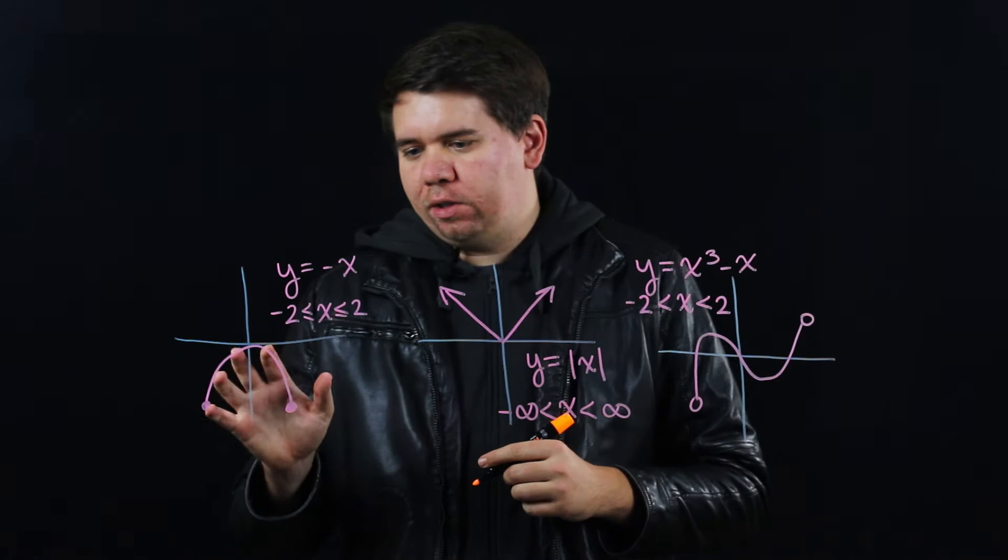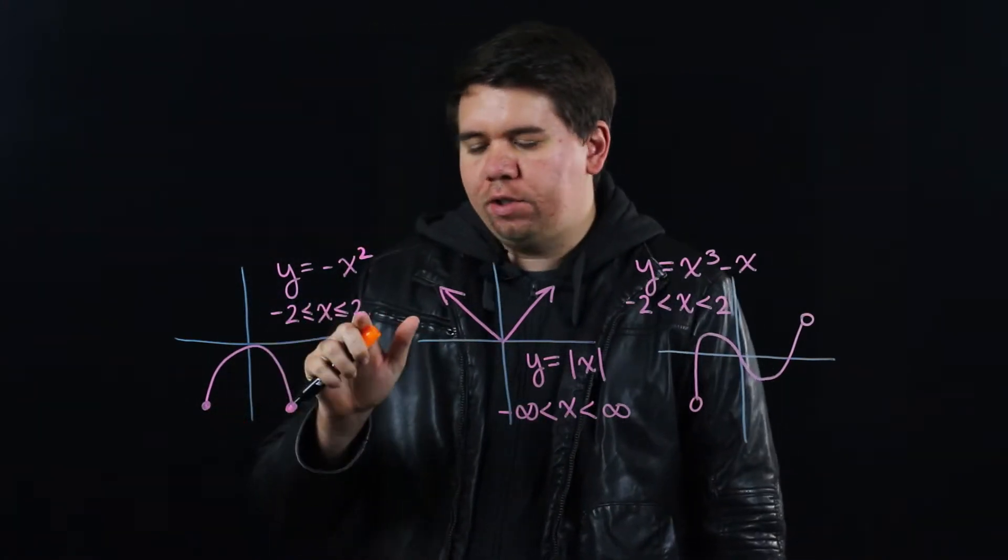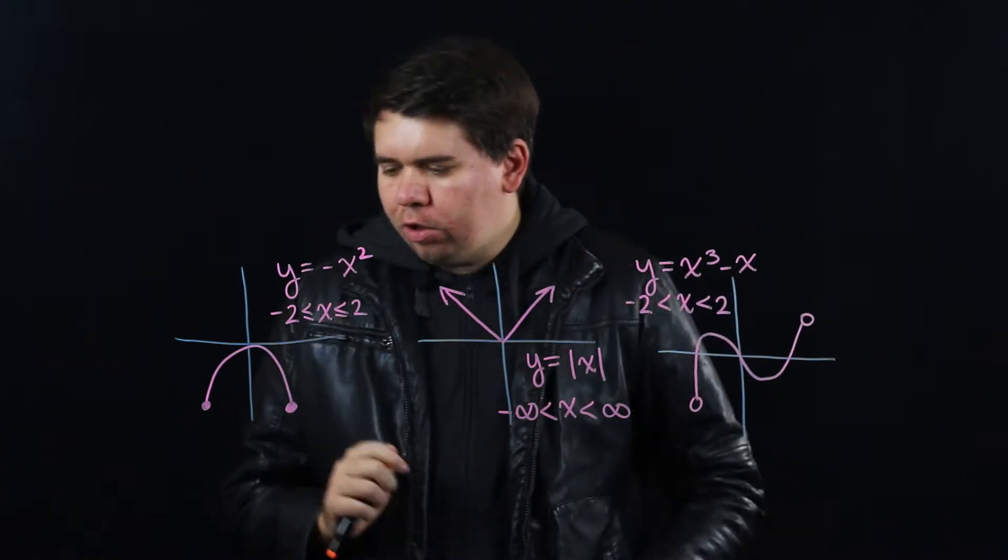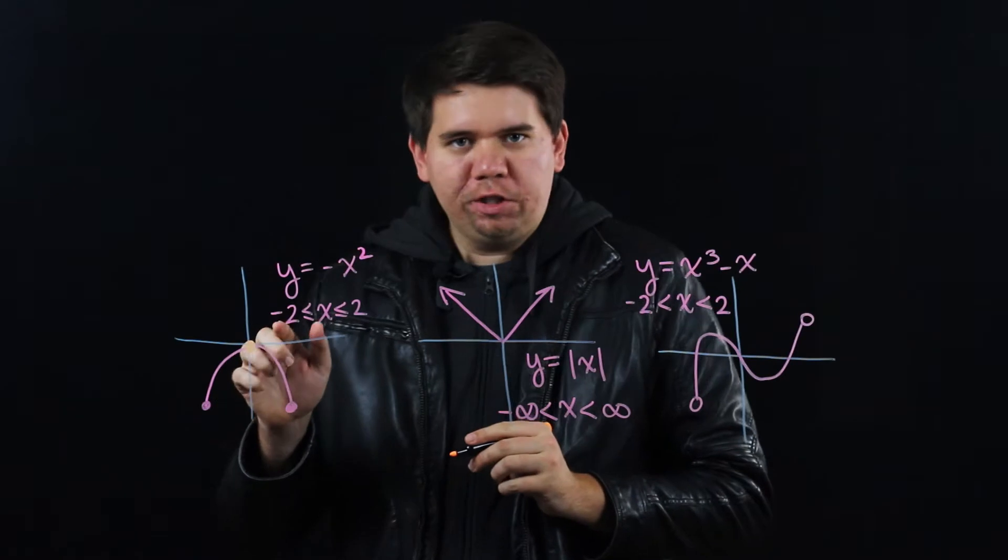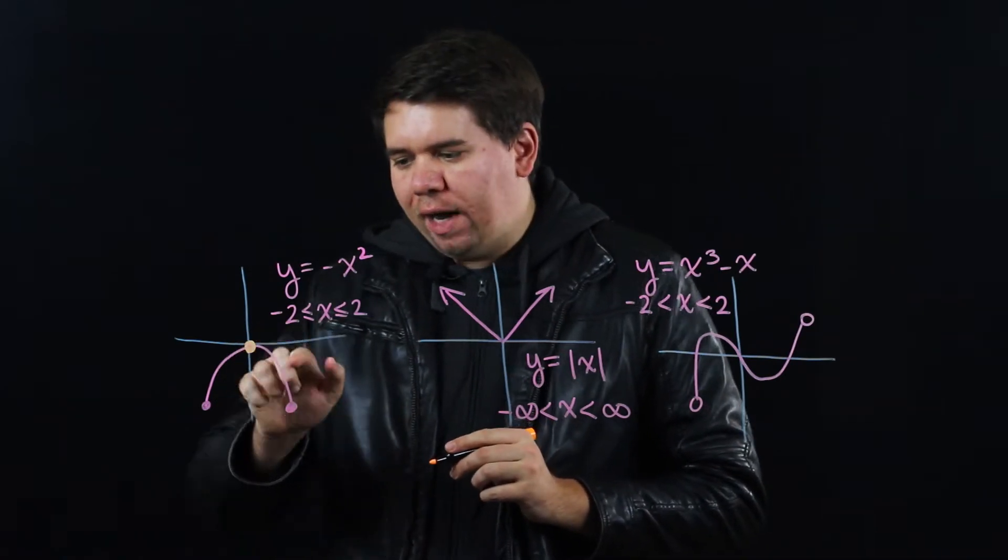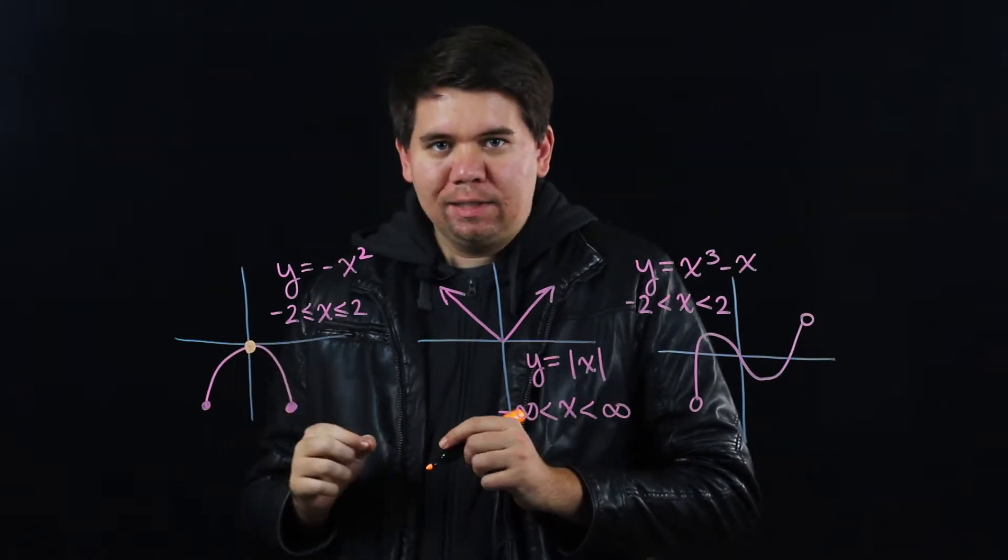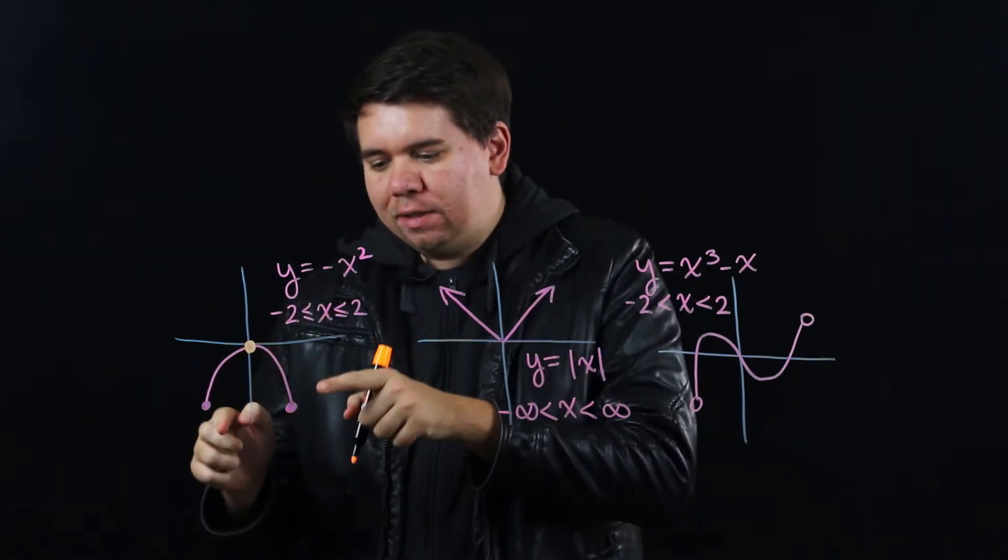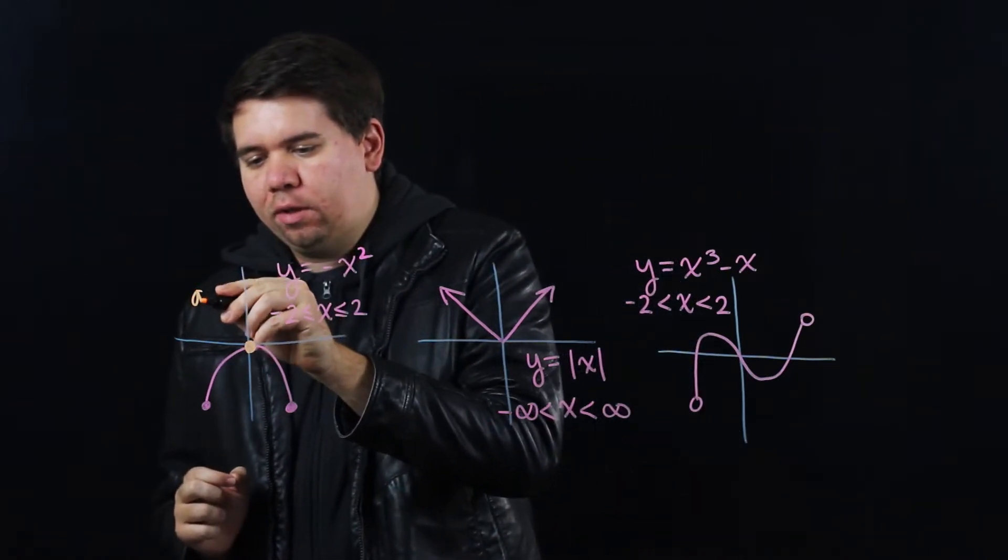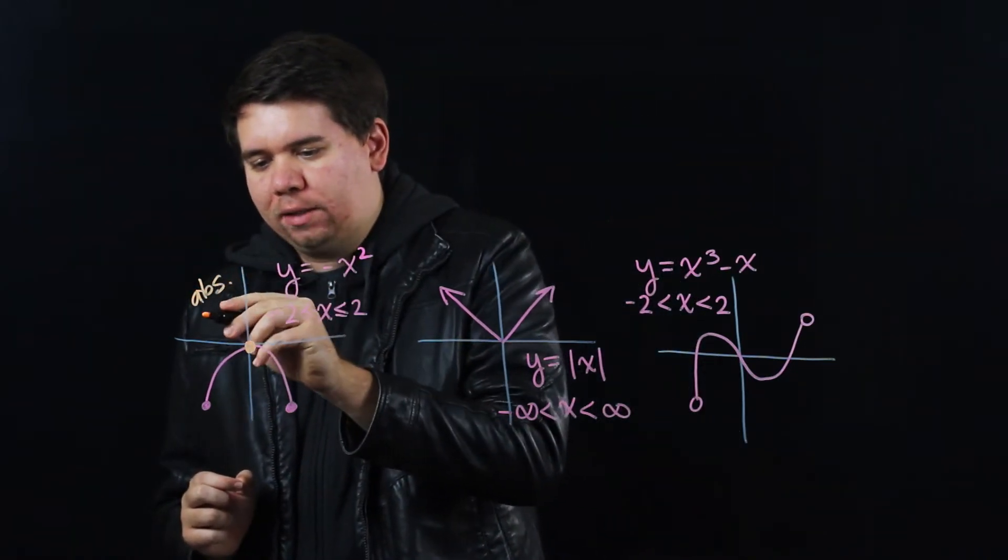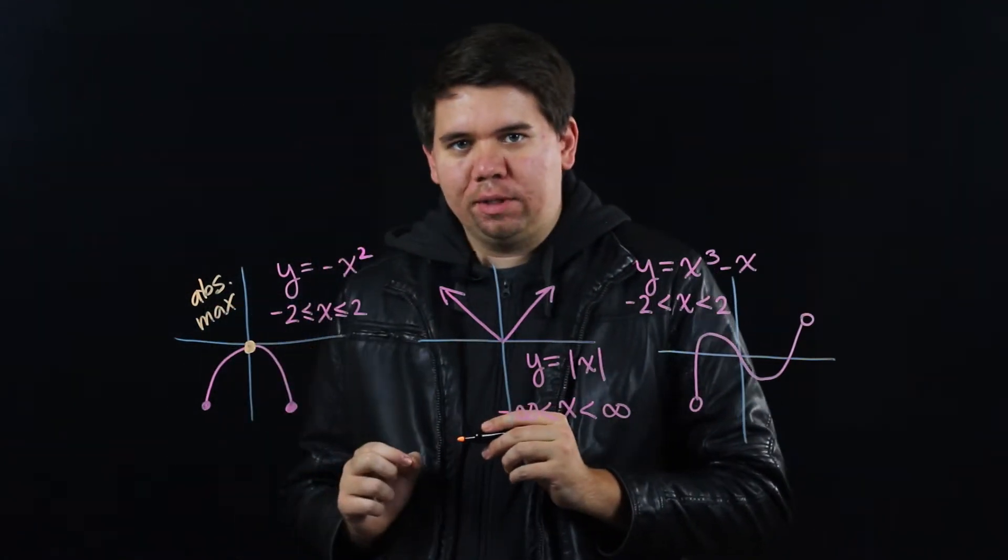For this first function, y equals negative x squared from negative 2 to 2. We can look at it and we can see clearly when x is 0, it's at its largest possible value. That's when it's 0, everywhere else it's negative. So at x equals 0, we have a maximum. And since it's the largest maximum over the entire specified domain, we're going to call that an absolute or global maximum.